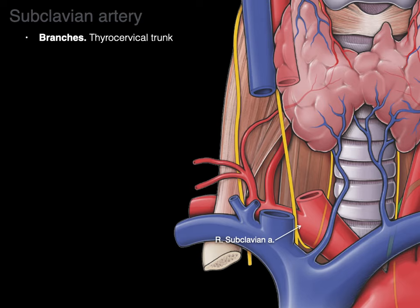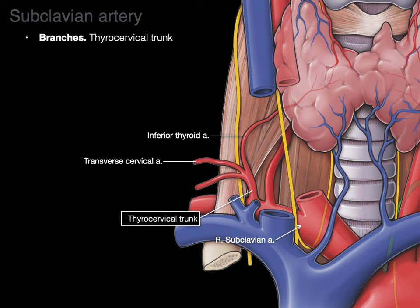Another branch is the thyrocervical trunk. As its name implies, it supplies the thyroid via the inferior thyroid artery and the cervical region. The transverse cervical artery goes across the posterior triangle and supplies the trapezius, levator, and rhomboids. The suprascapular artery also crosses the posterior triangle and supplies the shoulder. Together, the transverse cervical and suprascapular arteries provide collateral circulation to the shoulder, so you could pinch off the entire subclavian artery and still supply the upper limb.